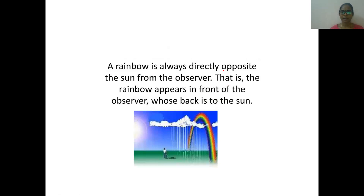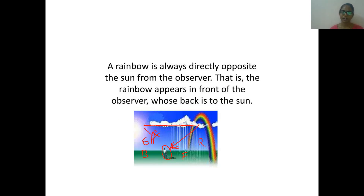Rainbow is always directly opposite the sun. The conditions to observe the rainbow: you must stand opposite to the sun — your back to the sun — and you face the rain. The sun is behind you and you observe the rainbow in front. When light falls on the droplets, reflects back to your eyes, then only you will see it. That means we must be in the opposition position for reflected light to reach us and we can see the rainbow.